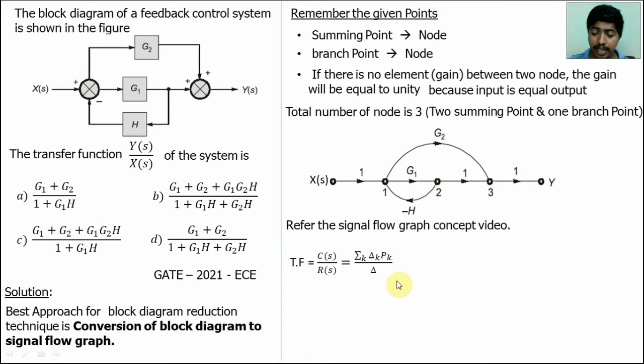So substitute here, the transfer function will become delta 1, P1 plus delta 2, P2 by delta. In the numerator, there is two terms. Compare this transfer function with the option. In the option A, in the numerator have two terms. In the option B, 1, 2, 3 terms. So option B is wrong.